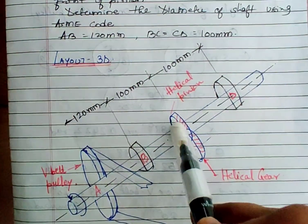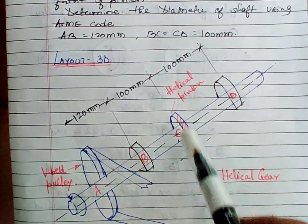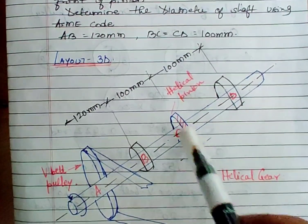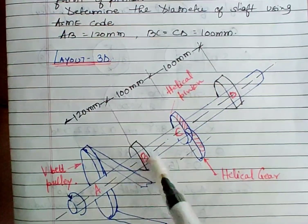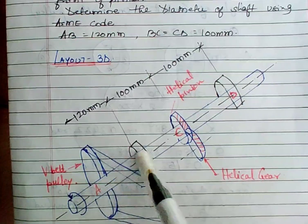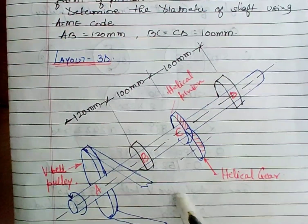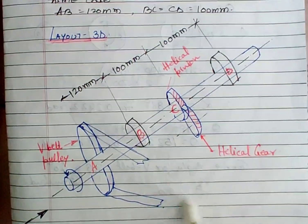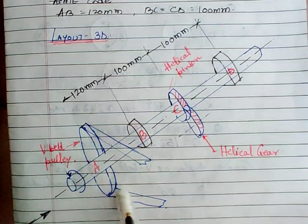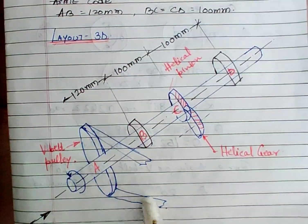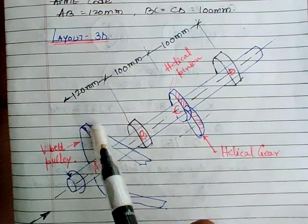The helical pinion is transferring power to a helical gear which is located horizontally in front. So we have drawn a helical gear horizontally in front of helical pinion C. To the left of bearing B at 120 mm is a V-belt pulley which is receiving power from some shaft located nearby. The belt tensions in the V-belt pulley are horizontal. So we have drawn the belt tensions horizontal as shown, with the distance marked as 120 mm.